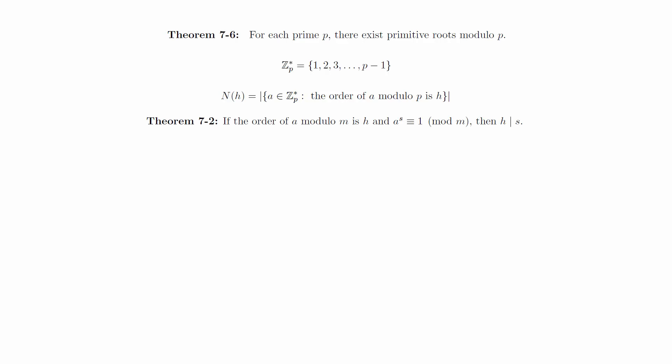Since we know that if a has order h, then h divides p minus 1, and we know that every element in the reduced residue system has exactly one order, we can count all p minus 1 elements by grouping them together based on their order.